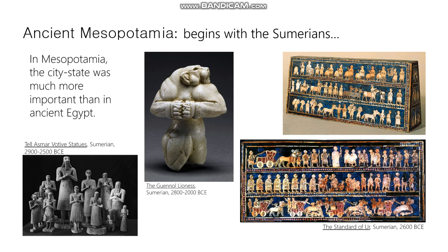First, we should cover where Mesopotamia is. Mesopotamia is referred to as the land between two rivers — the Tigris and the Euphrates. It's sometimes also referred to as the Fertile Crescent, though that's a slightly bigger region that includes the Levant. In this region, large cities were possible because irrigation allowed people to farm and produce enough food for large populations.